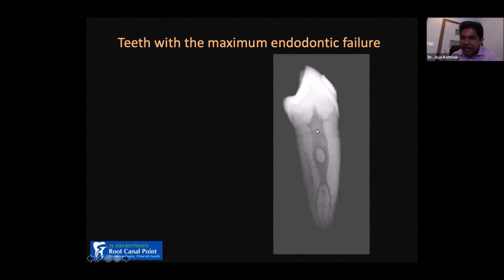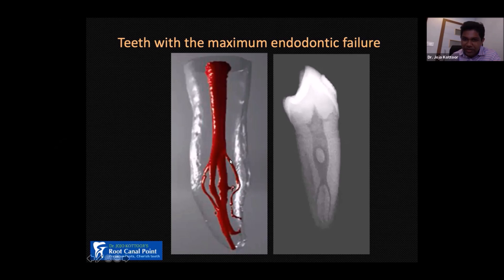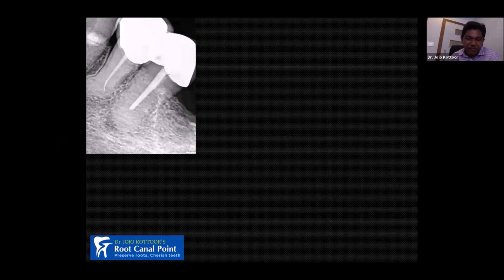It starts like a single canal and when it reaches the middle third, it bifurcates into two, three, four, or even five root canal systems. This micro-CT image shows a single canal branching into three, four, or five at the middle or apical third. When we do root canal treatment without magnification, we won't be able to see the bifurcation, and there can be failure.